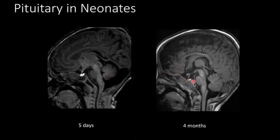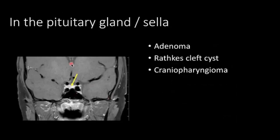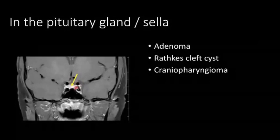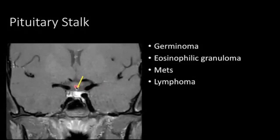To approach the differential diagnosis: first identify the sella and the pituitary — both the adenohypophysis and the posterior pituitary bright spot. Then determine the epicenter of the lesion — is it in, above, below, or lateral to the pituitary? Assess whether the lesion is solid, cystic, or mixed; whether there is calcification or flow voids. Lesions centered in the sella suggest pituitary adenoma, Rathke's cleft cyst, or craniopharyngioma. Lesions centered in the suprasellar region or involving the pituitary stalk suggest germinomas, eosinophilic granulomas, metastases, or lymphoma.